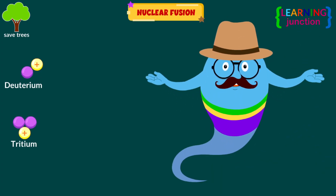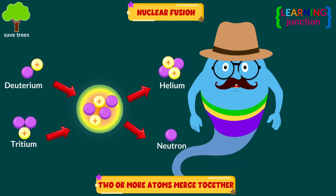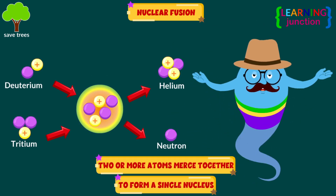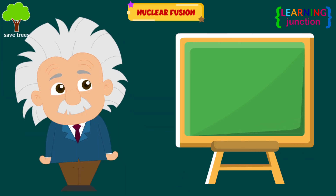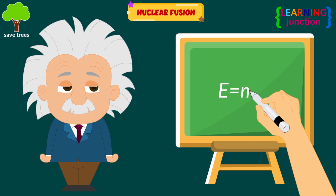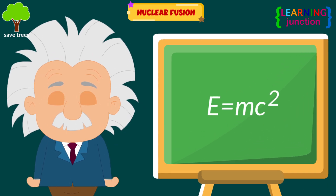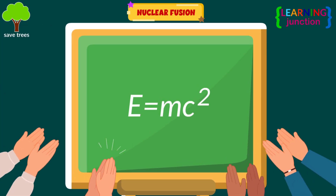Nuclear fusion is a reaction that occurs when two or more atoms merge together to form a single nucleus. A large amount of energy is released in this process. Einstein's equation, E equals mc squared, which says in part that mass and energy can be converted into each other, explains why this process occurs.